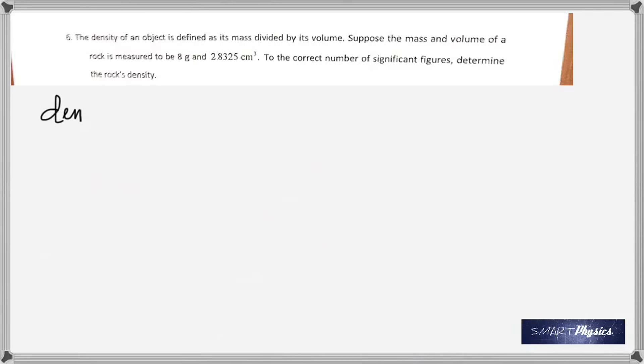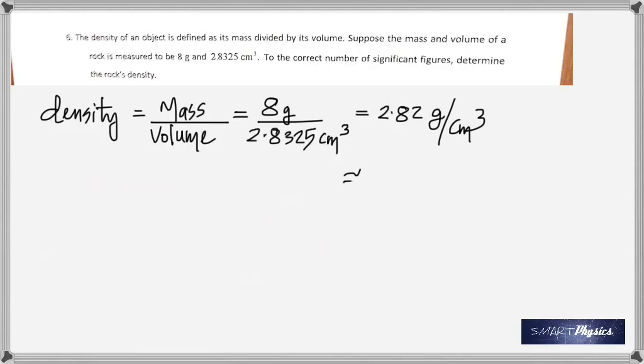Which brings us to the sixth question. This is about density. Density of an object is defined as mass divided by volume. And, if the mass and volume of a rock is measured, its mass is 8 gram, and its volume is 2.8325 centimeter cube, you've got to find the density. And, this is chiefly talking about significant figures. Density is mass by volume. So, you have 8 gram by 2.8325 centimeter cube, which gives 2.82 gram per centimeter cube.